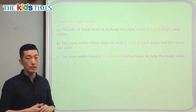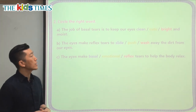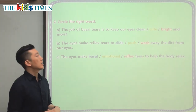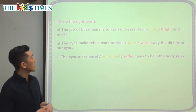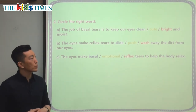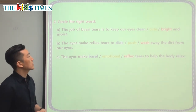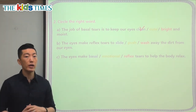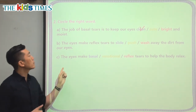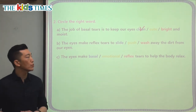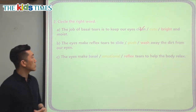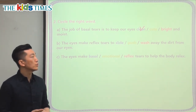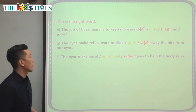Let's choose the correct words to finish the sentences from the reading. The job of basal tears is to keep our eyes clean and moist — not cute or bright, but clean and moist. Moist means a little bit wet, so not completely dry. Part B: the eyes make reflex tears to wash away the dirt from our eyes — just like how we wash our hands under a sink to wash away the dirt.